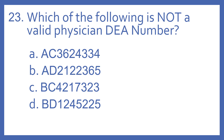Number 23. Which of the following is not a valid physician DEA number? A. AC3624334, B. AD2122365, C. BC4217323, D. BD1245225. And the answer is C. BC4217323 is not a valid physician DEA number.